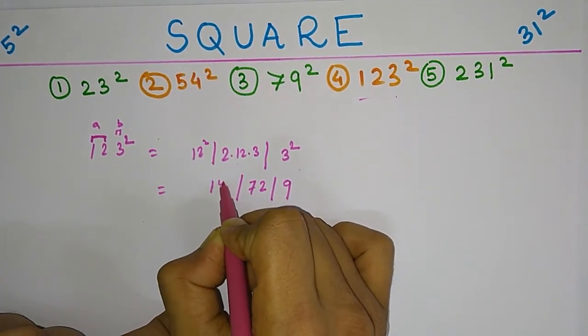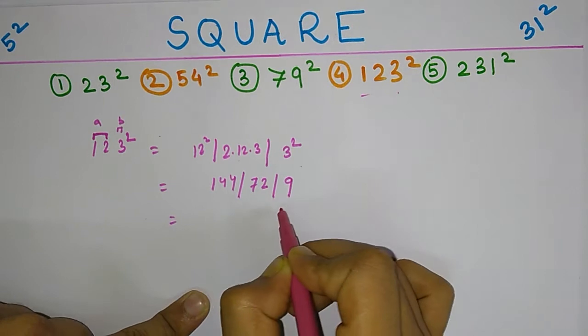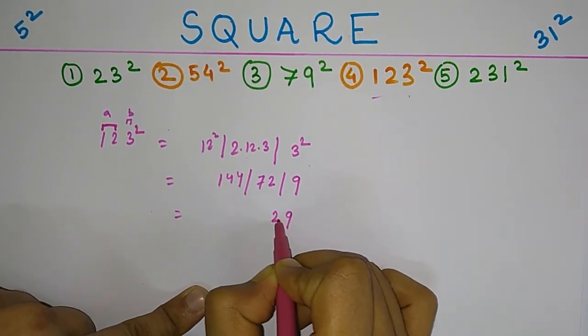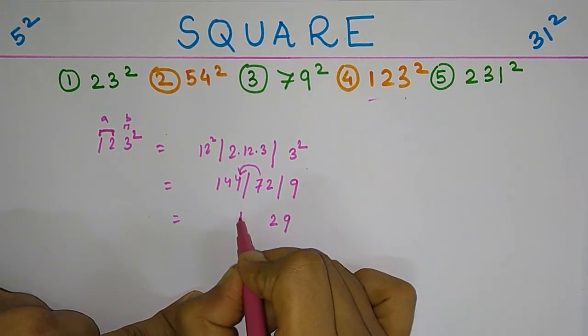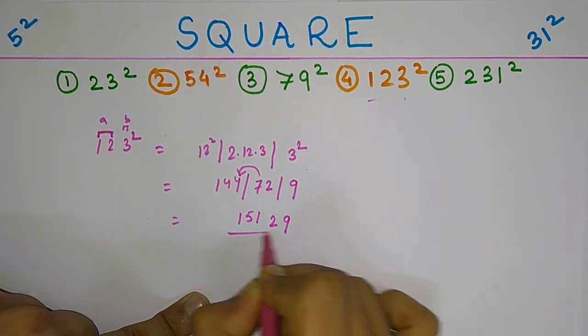Now 9, 2, 7 will be carried forward. 144 plus 7 is 151. So here we have the square of 123.